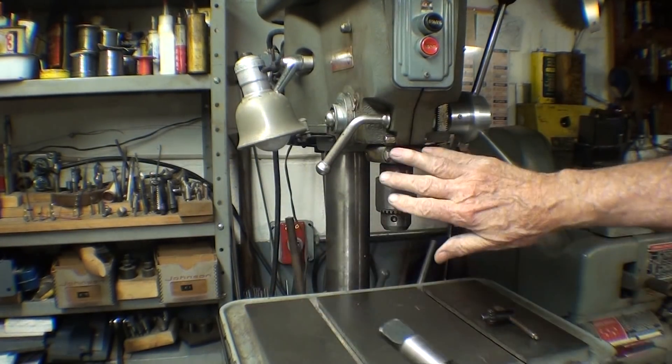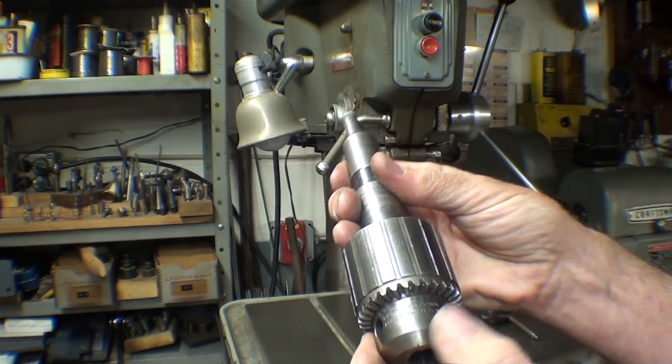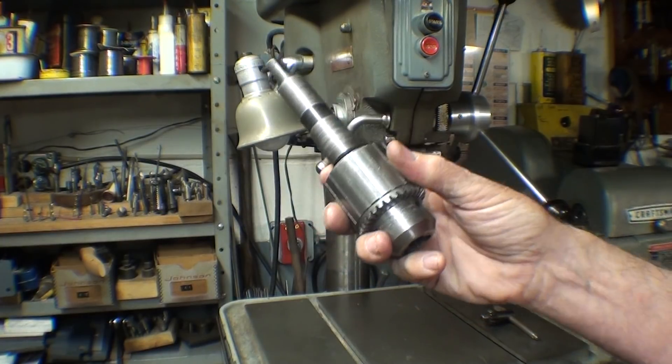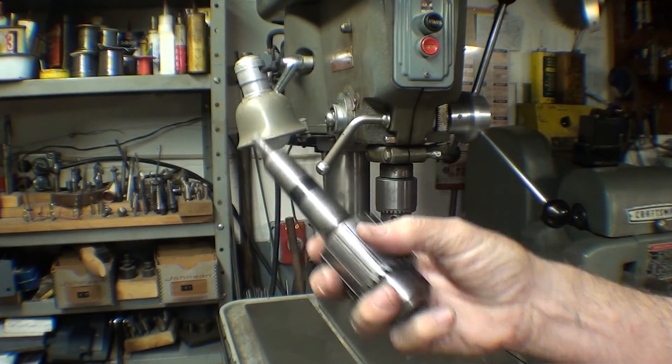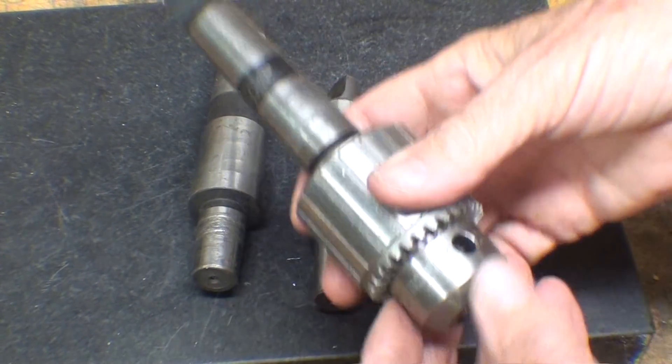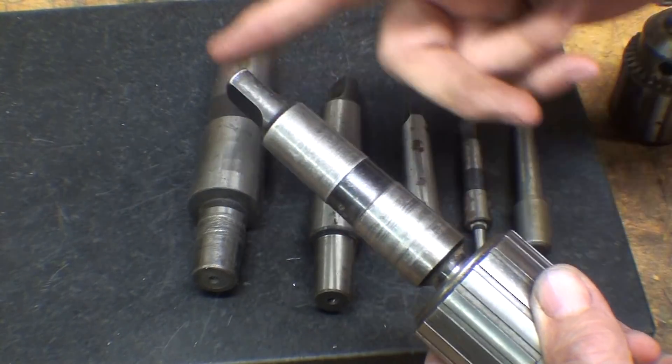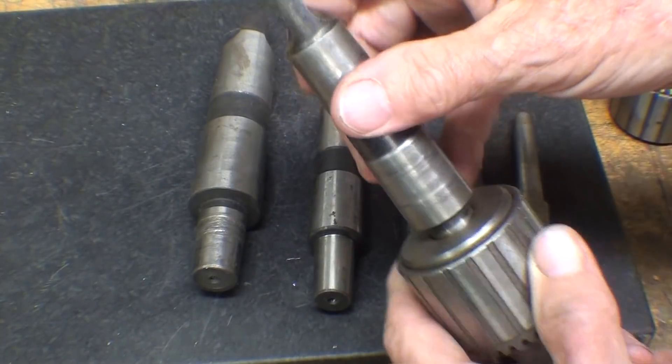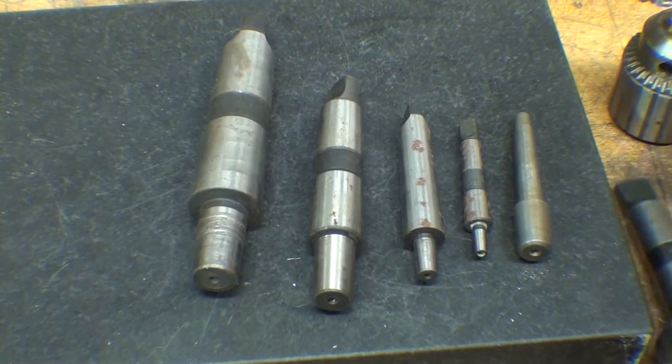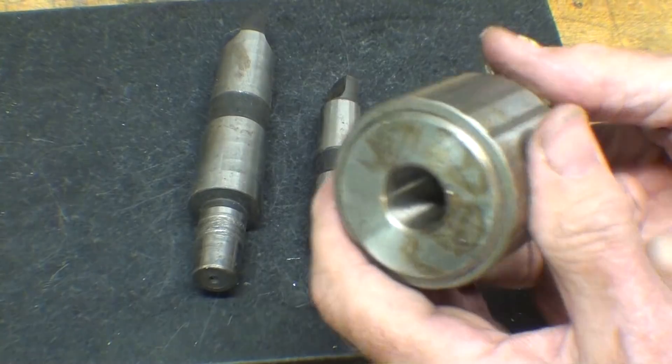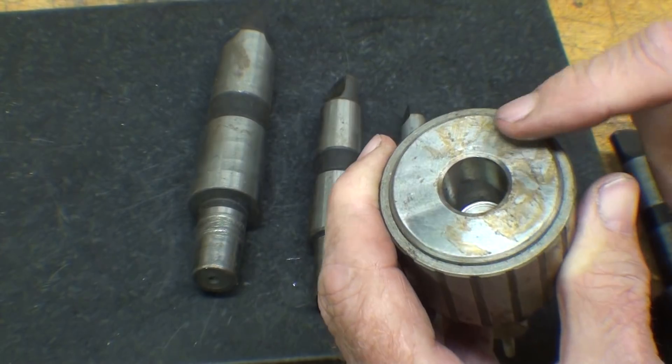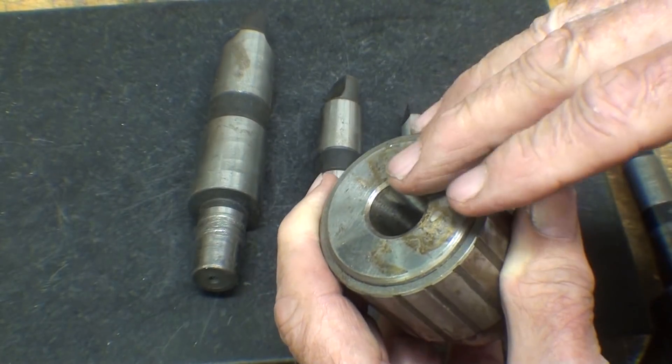Before I talk about this, I need to talk just a little bit about Jacobs tapers. If you don't want this lesson on Jacobs tapers, just advance until you find the spot in this video where I'm actually removing the chuck. When you look at this type of chuck, it has a number three Morse taper there, but we don't really need to talk about that. There's another Jacobs taper that fits into the chuck itself.